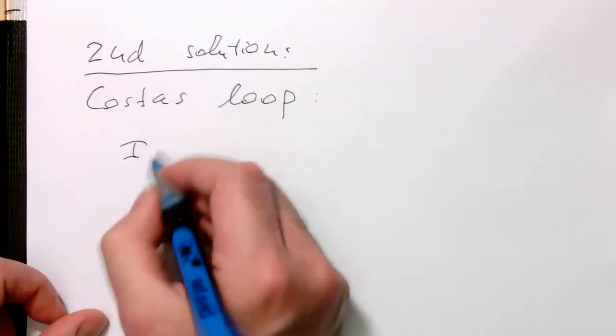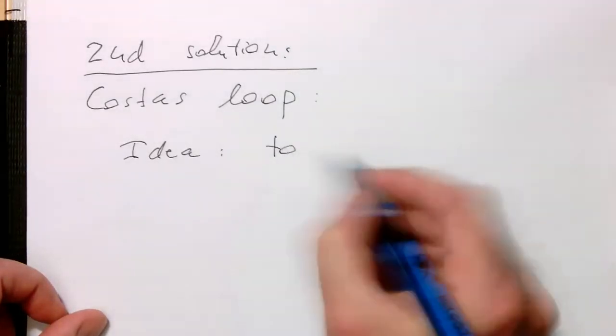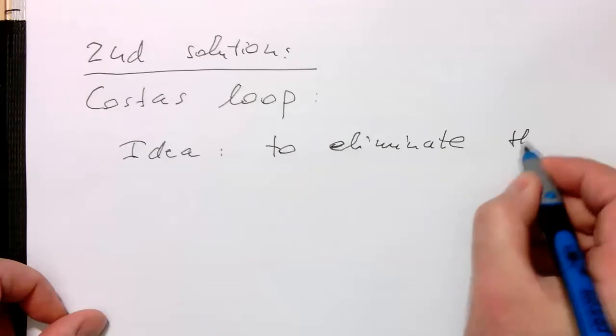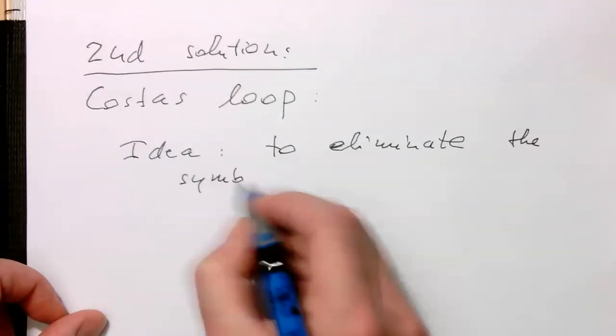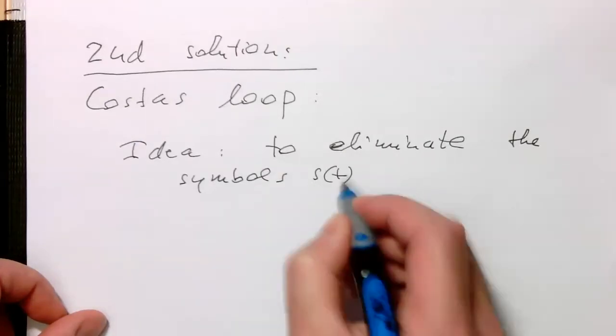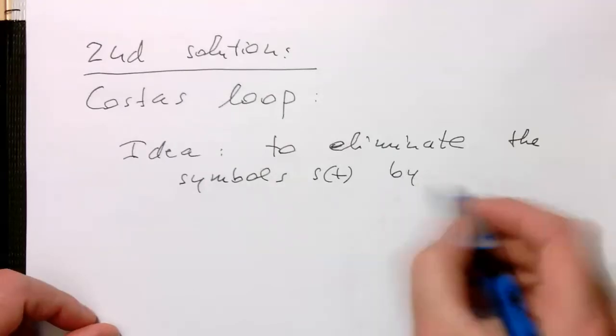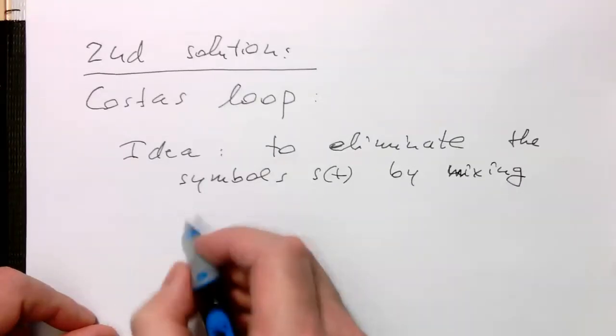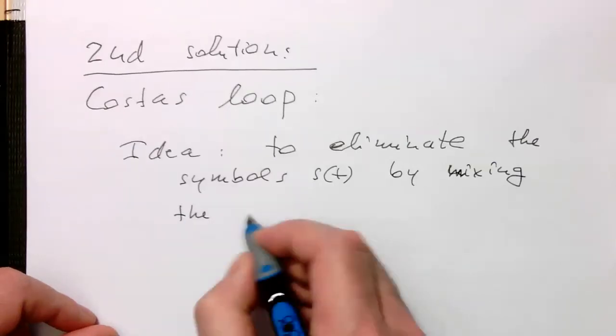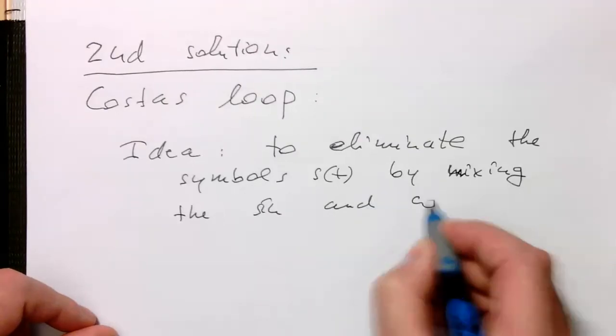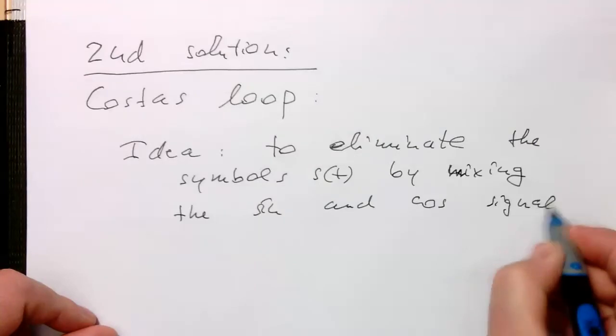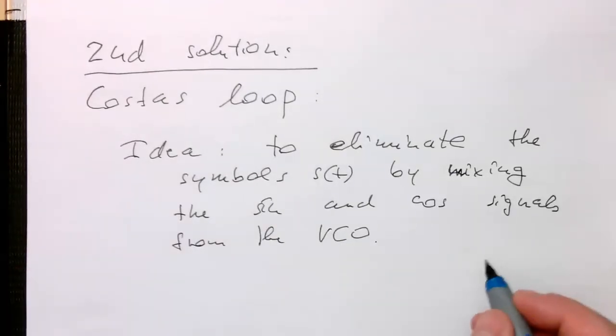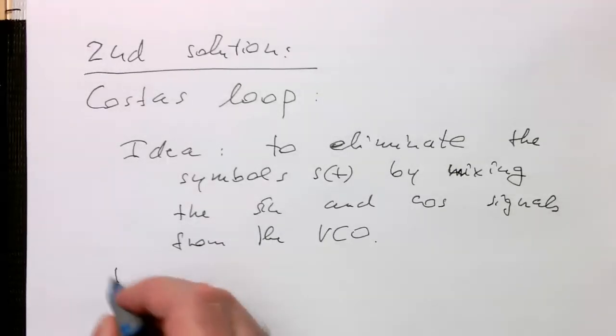The idea behind Costa's loop is to eliminate the symbols S(t) by mixing both the sine and cosine signals from the VCO.